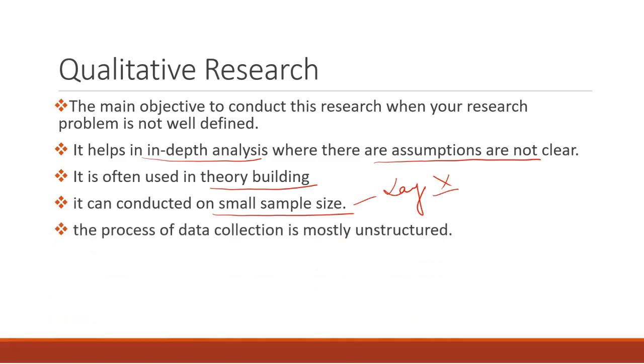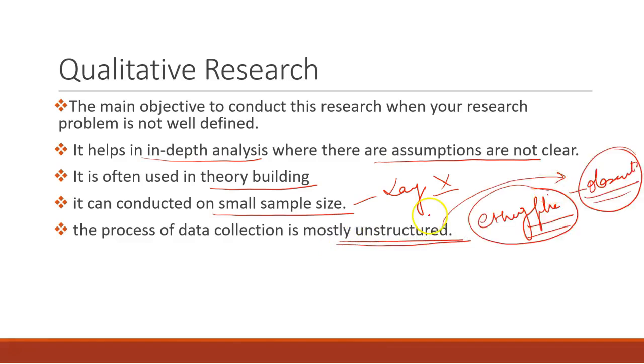The process of data collection is mostly unstructured. The data which we collect is mostly unstructured data. One classic example is ethnographic research, which is basically research based on observation. Sometimes you don't need to collect any data or go into structured research. You can only observe people, observe various phenomena and get a lot of data, mostly not in numbers but in statement format. That statement format can easily be analyzed. So data collection is purely unstructured.